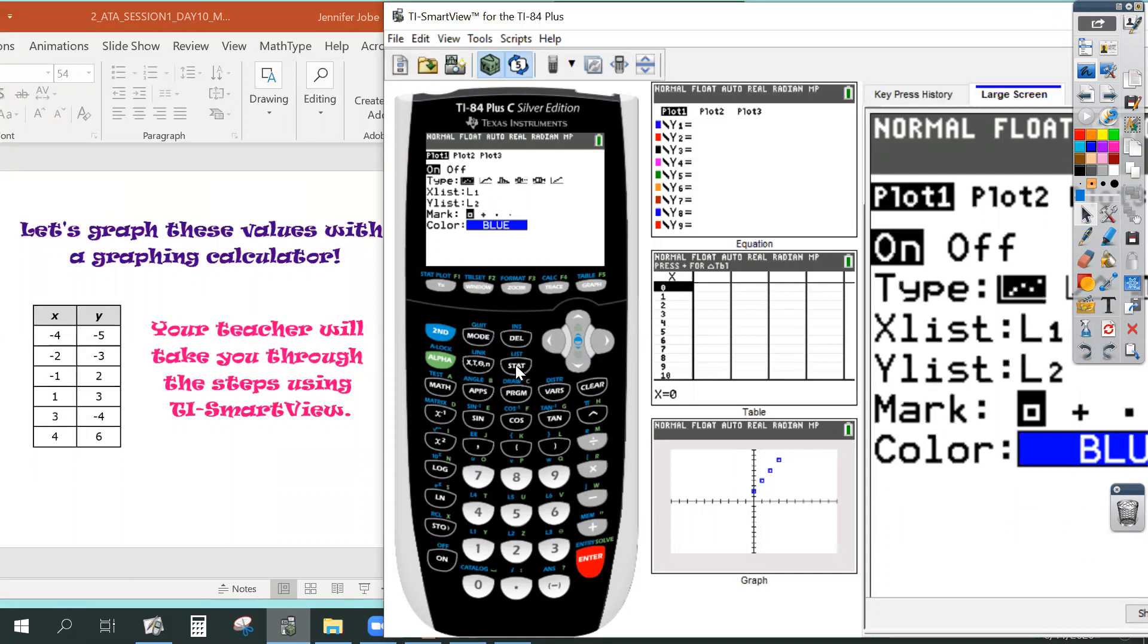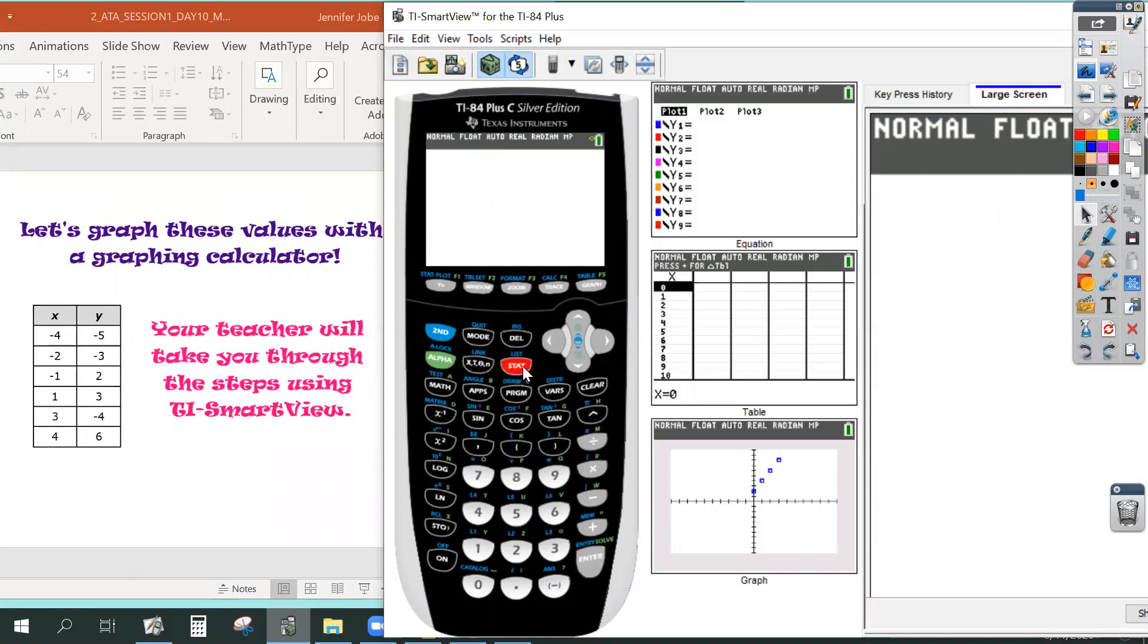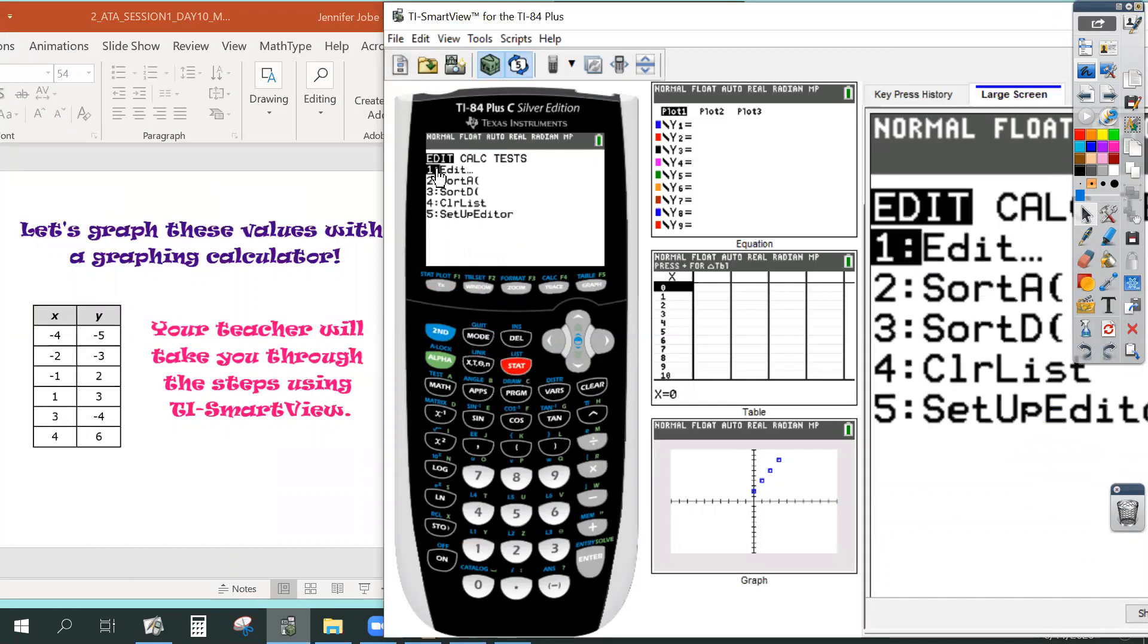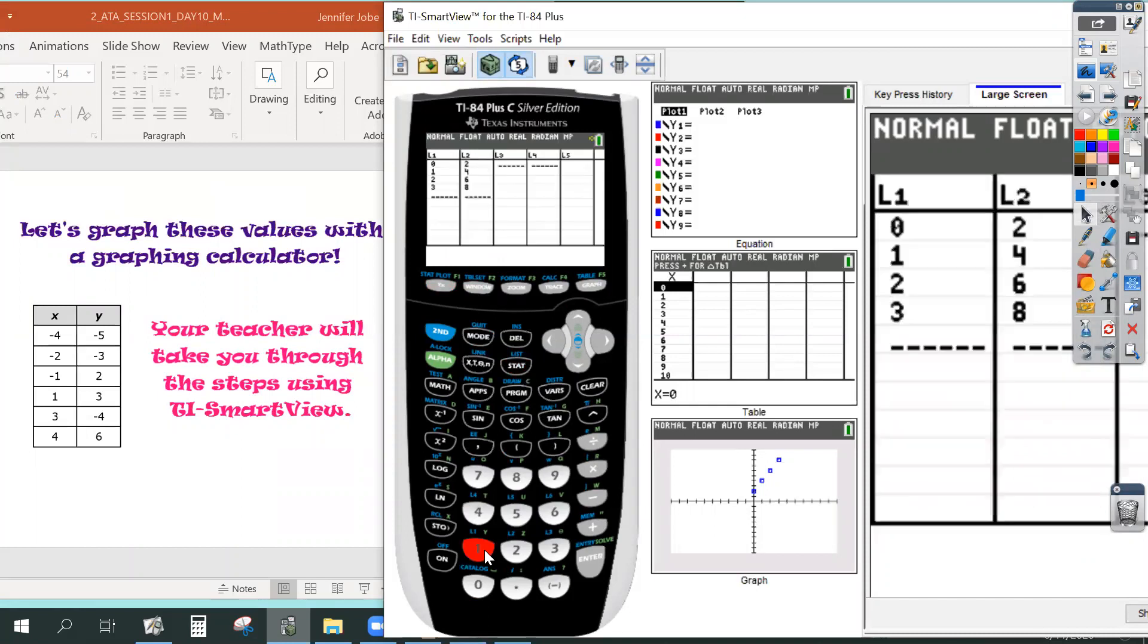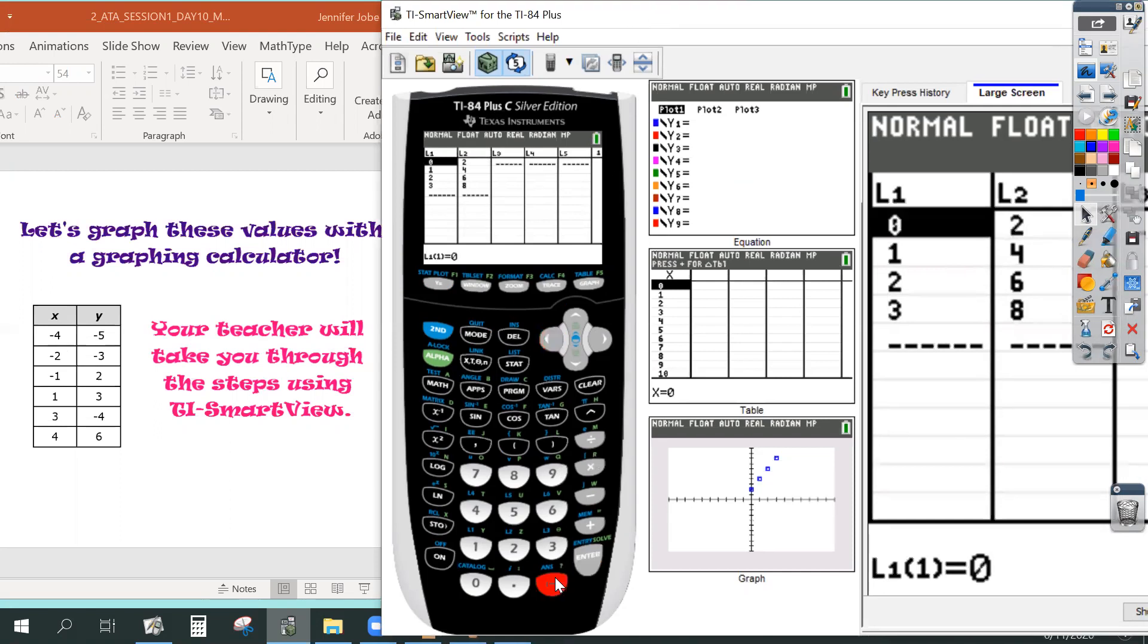Then I'm going to hit the button that says stat, which is two to the right of the green one, stat. And we're going to go to edit. So hit one or select enter. And we're going to come over here and we're going to type in these coordinates. Now, mine already has stuff in there. Just ignore it. So we're going to go ahead and type in negative four and then hit enter. Negative two, enter, and so on.